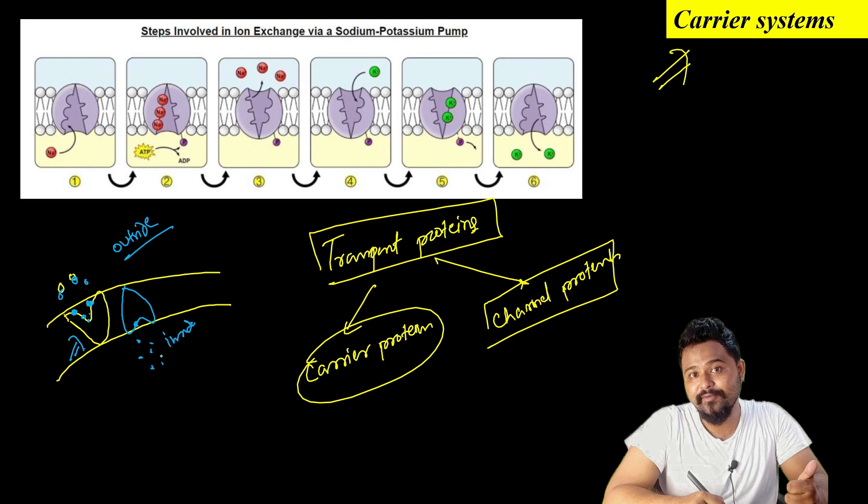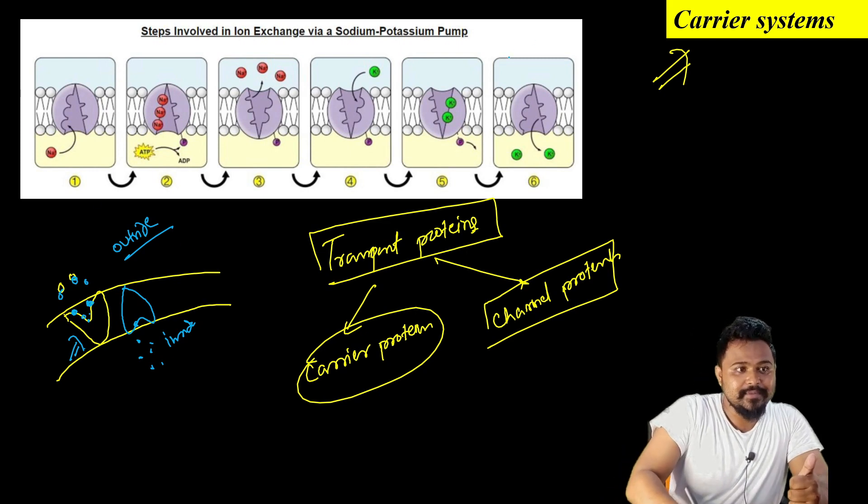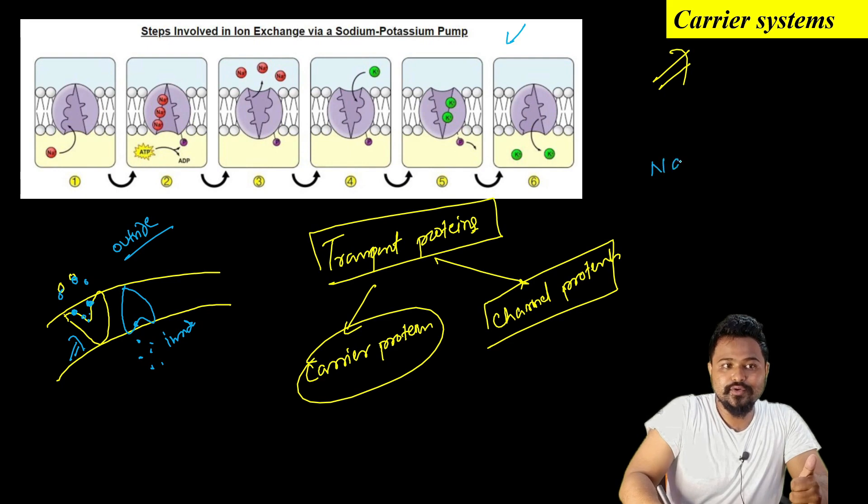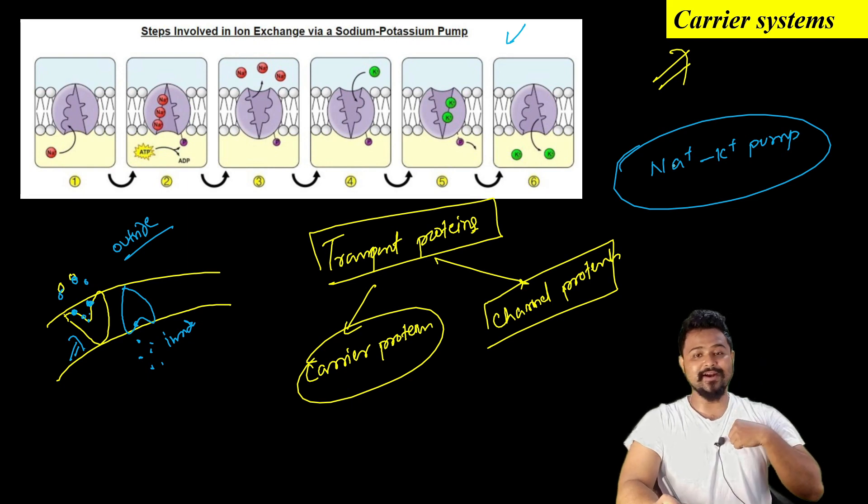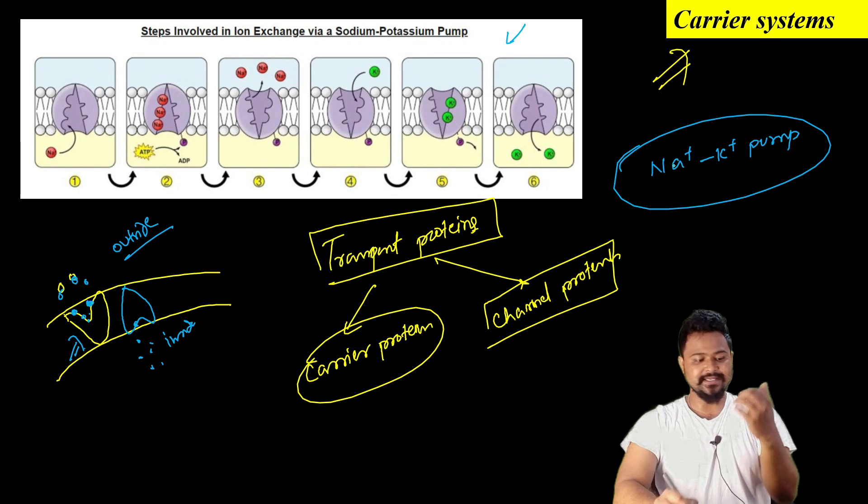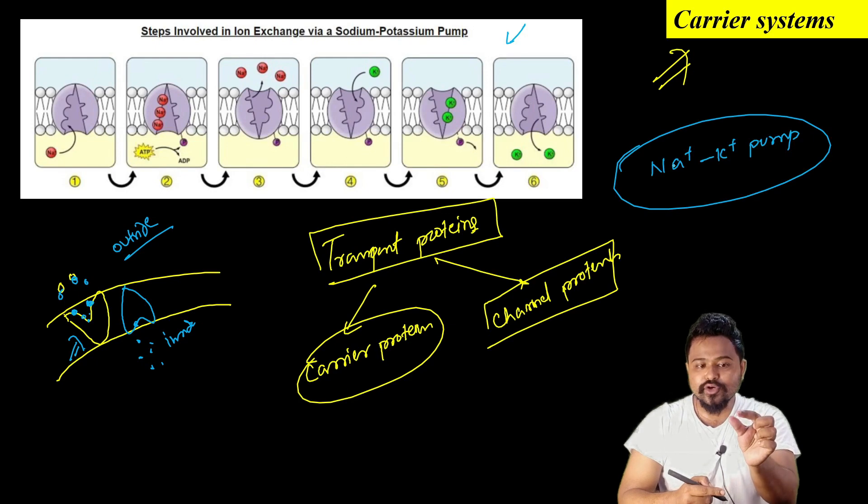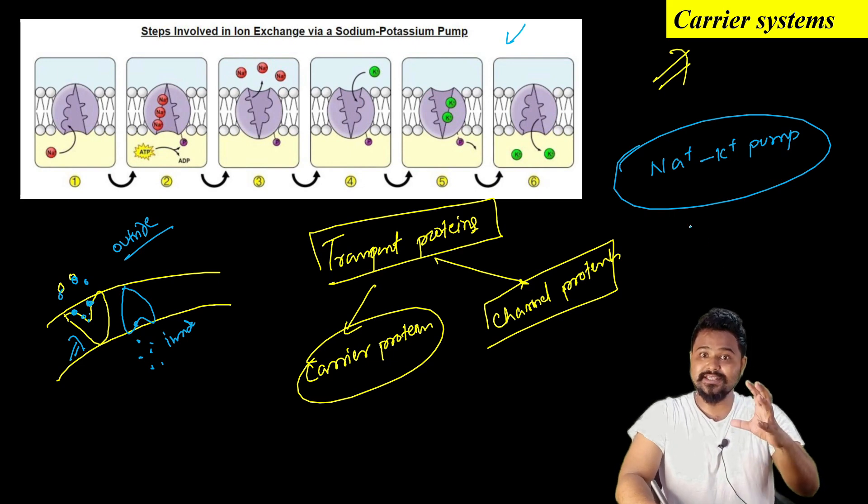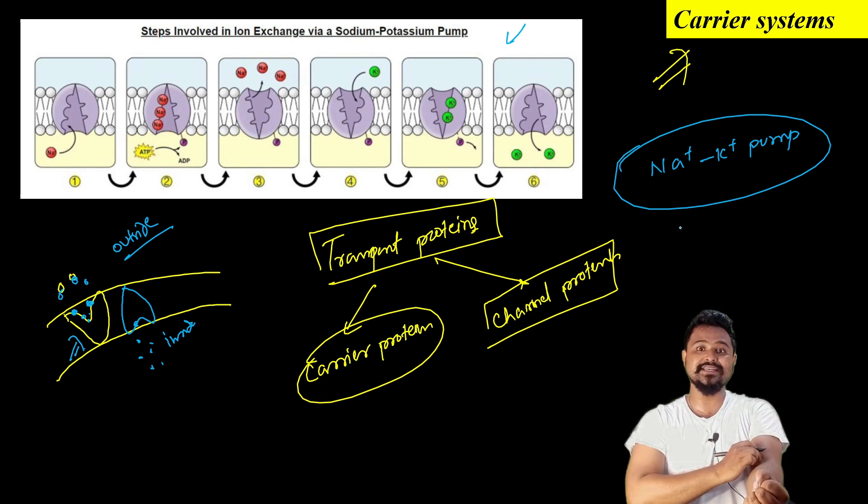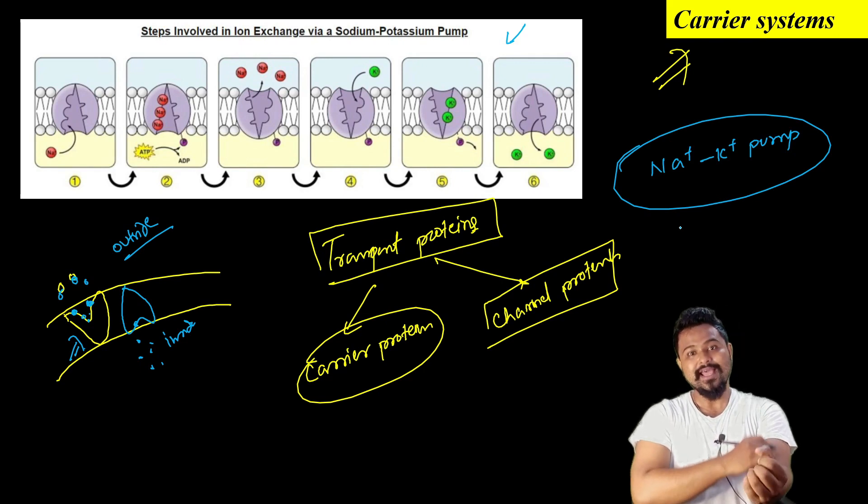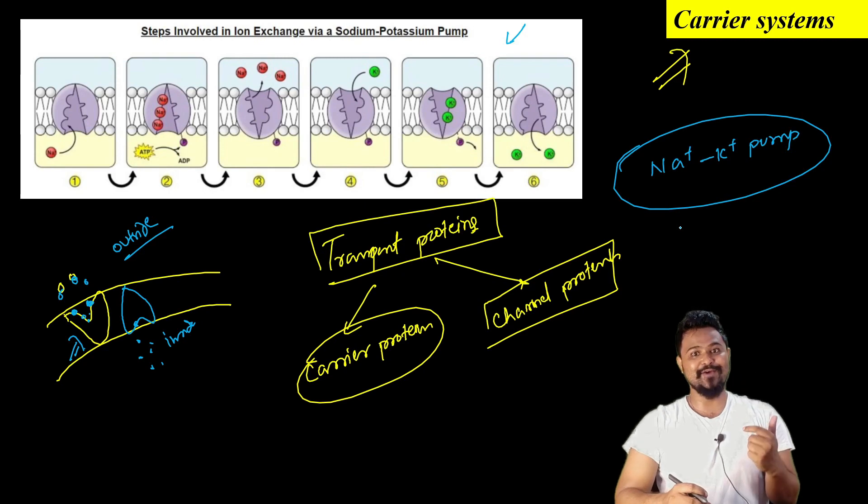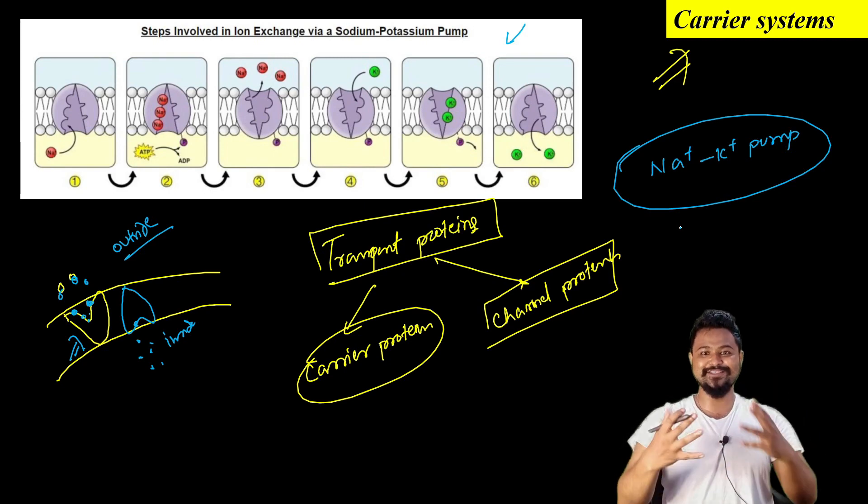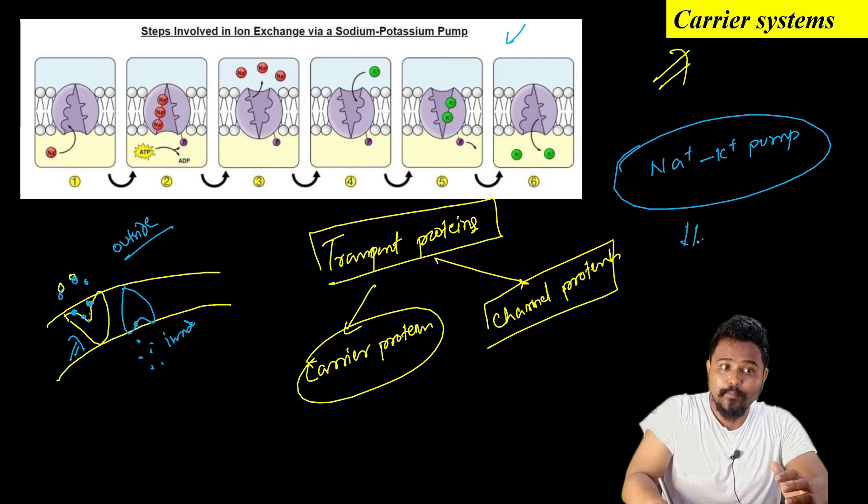An example is the sodium-potassium pump. This is very important in nerve cells. Nerve fibers transport information using the sodium-potassium pump. The electrochemical gradient difference allows nerve signals to pass through. This enables muscle movement. In human physiology you'll learn more details.